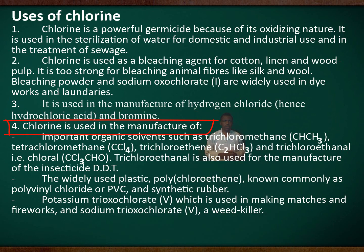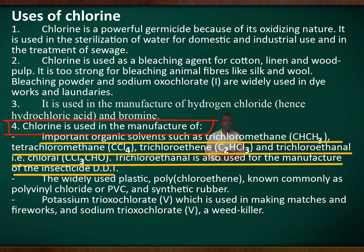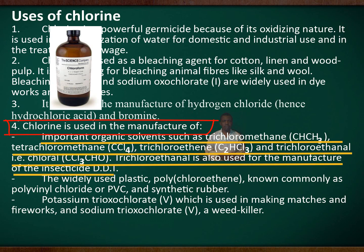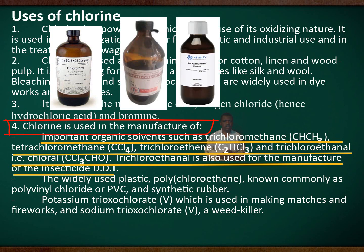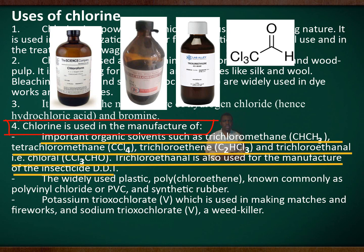Chlorine is used in the manufacture of important organic solvents such as trichloromethane, tetrachloromethane, trichloroethane, and trichloroethanol, also known as chloral.